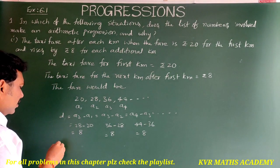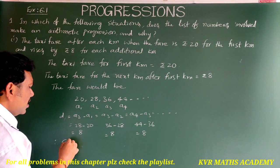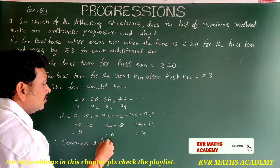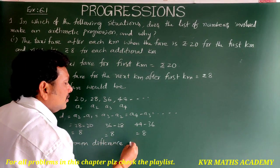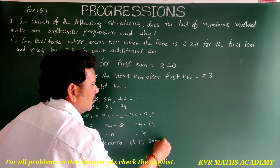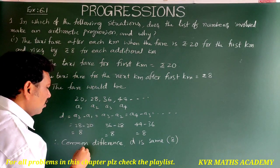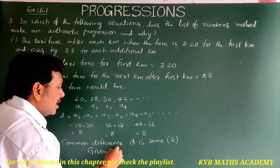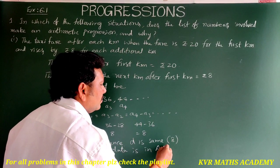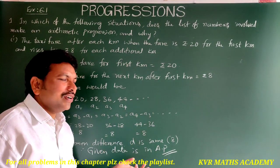The common difference d is the same, equal to 8. Therefore, the given data is in AP.